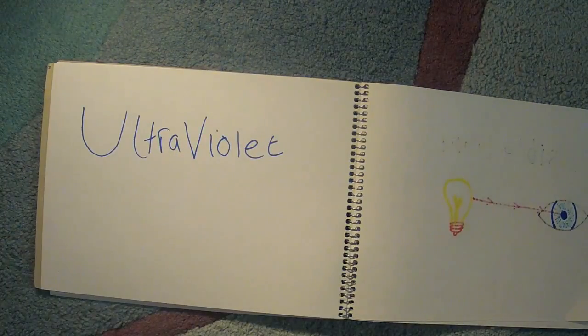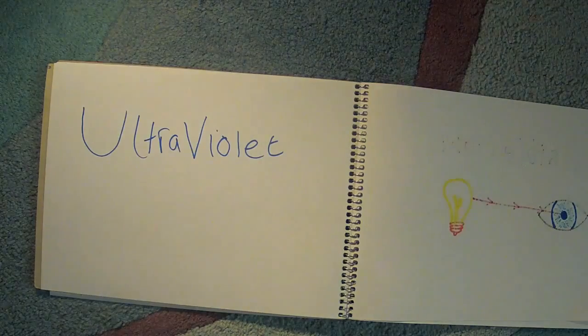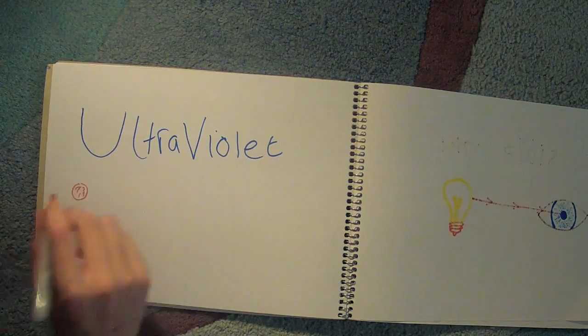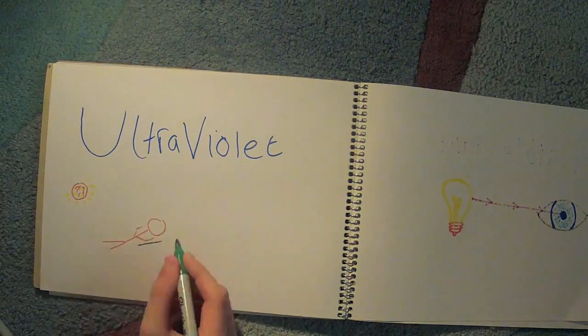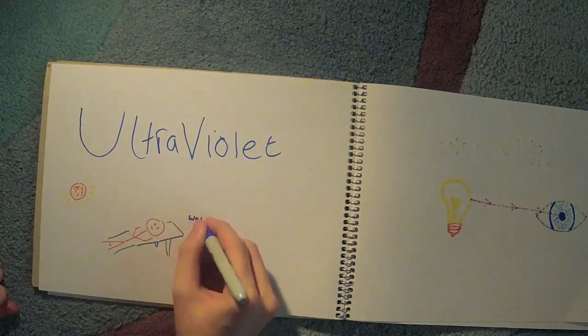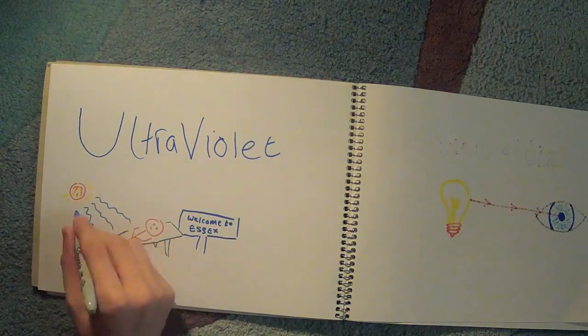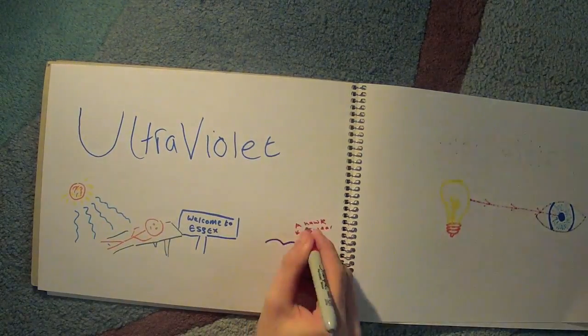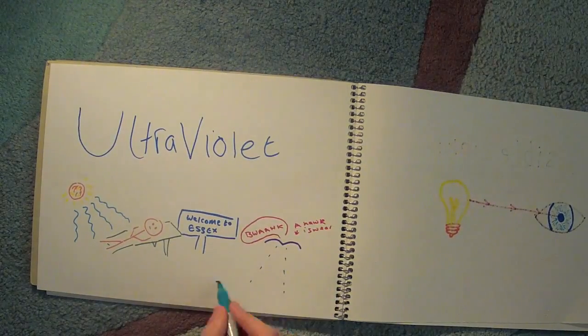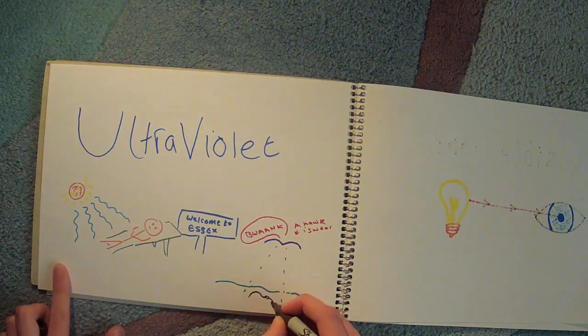Speaking of ultraviolet, it's up next, with wavelengths between four times ten to the minus seven meters and ten to the minus eight meters. It's very useful for sterilization, security marking, and getting a lovely tan. Some birds can see ultraviolet light. Hawks use it to track the route of voles. UV is also ionizing, meaning that it can kill cells.